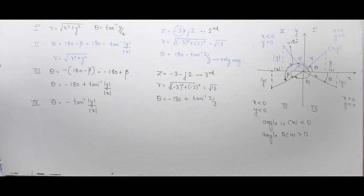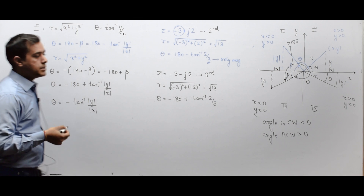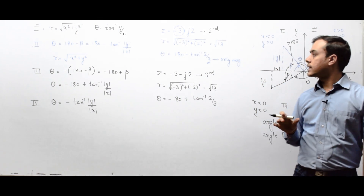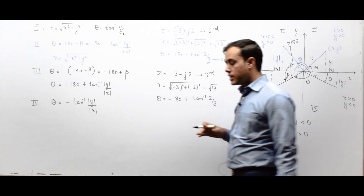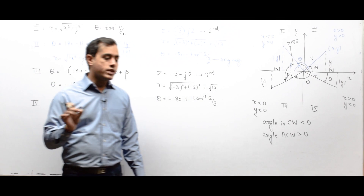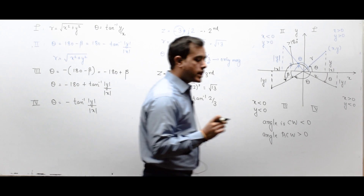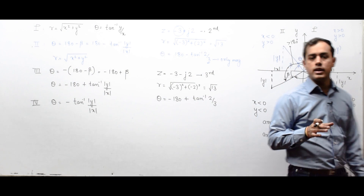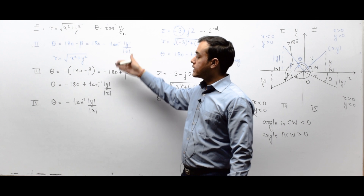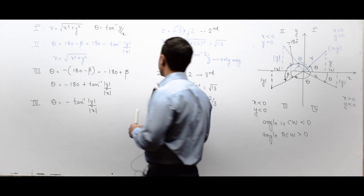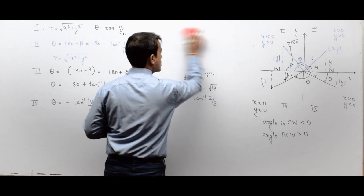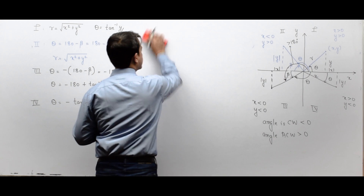So whenever a complex number is given in rectangular coordinates x + jy, first find the quadrant it lies in. The magnitude is always √(x² + y²), and the angle always depends on the quadrant. This concept is very much used in control systems, power systems, and machines.